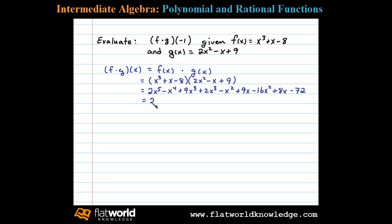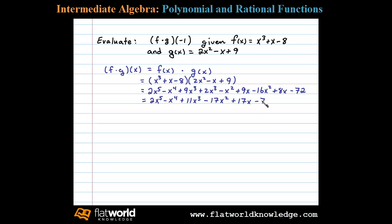Now we'll collect like terms. We have 2x to the fifth, minus x to the fourth. Then 9x cubed plus 2x cubed adds up to 11x cubed. We have negative x squared and minus 16x squared, giving minus 17x squared. Then 9x plus 8x gives plus 17x, and then minus 72.